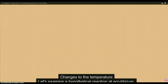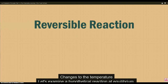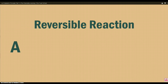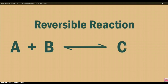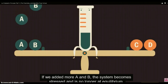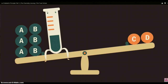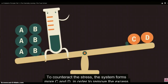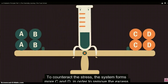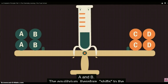Let's examine a hypothetical reversible reaction at equilibrium where reactant A reacts with reactant B to form product C and product D. If we added more A and B, the system becomes stressed and is no longer at equilibrium. To counteract the stress, the system forms more C and D in order to remove the excess A and B. The equilibrium, therefore, shifts to the right.